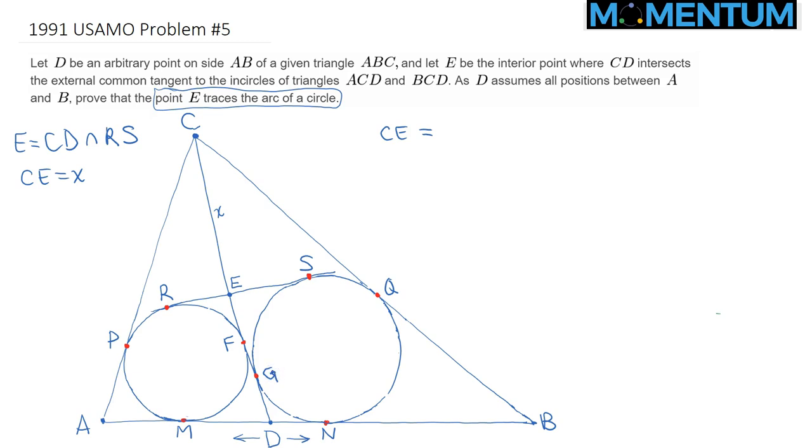So CE is simply equal to CF minus EF. That's clear. And alternatively, you can write CE as CG minus EG.